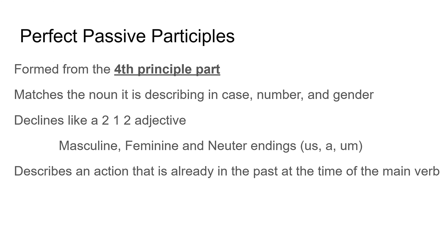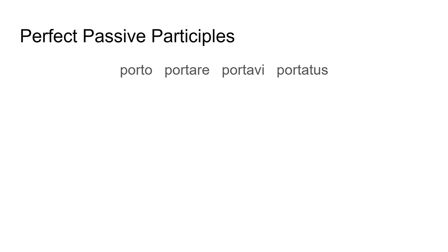A perfect passive participle describes an action that's already in the past by the time the main verb comes along. The action of the participle has already happened by the time the main part of the sentence comes along. So here are my four principal parts of the verb 'to carry': porto, portare, portavi, portatus. The fourth one — the perfect passive participle — is the one I'm interested in today.